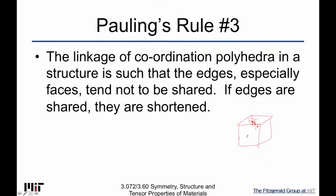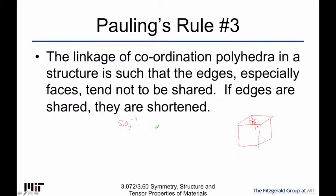It's a bit easier to think about in structures where the polyhedra are free to move during processing, like glass. For SiO4, these are tetrahedra floating around — silicon bonded to four oxygens in a tetrahedral arrangement.